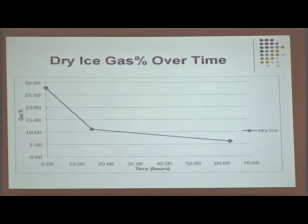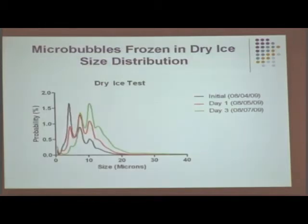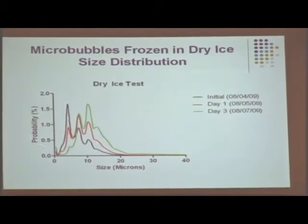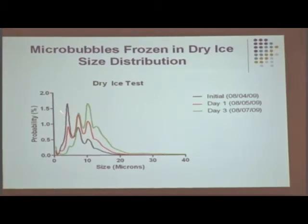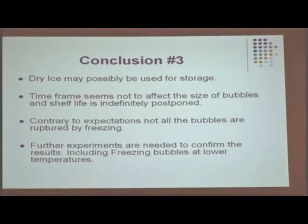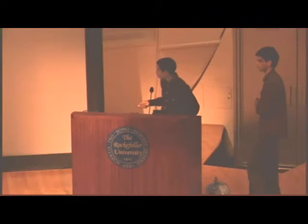This graph represents the gas ratio — the amount of marker bubbles plotted over time. As we can see, the number of marker bubbles decreased over time. However, the size of the marker bubbles left in dry ice was somewhat stable compared to the rotating ones, remaining around 10 microns, which is within the acceptable range. Our conclusion was that dry ice may possibly be used for storage, since it creates stable micro-bubbles and the size does not appear to be significantly affected over time.